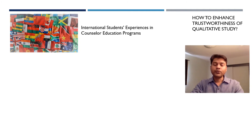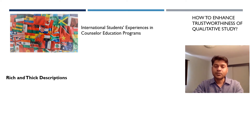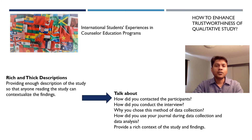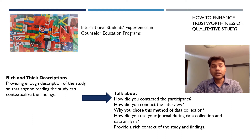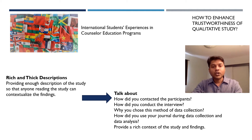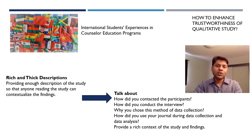Another way to improve trustworthiness is by providing a rich and thick description of the study. When preparing the manuscript, you talk in detail about how you started the study, how you contacted participants, how you conducted interviews, how you collected the data, how you analyzed it, how you maintained your journal, and how you integrated journal data into the final write-up. You provide a very rich context so that anyone reading the study can contextualize the findings.